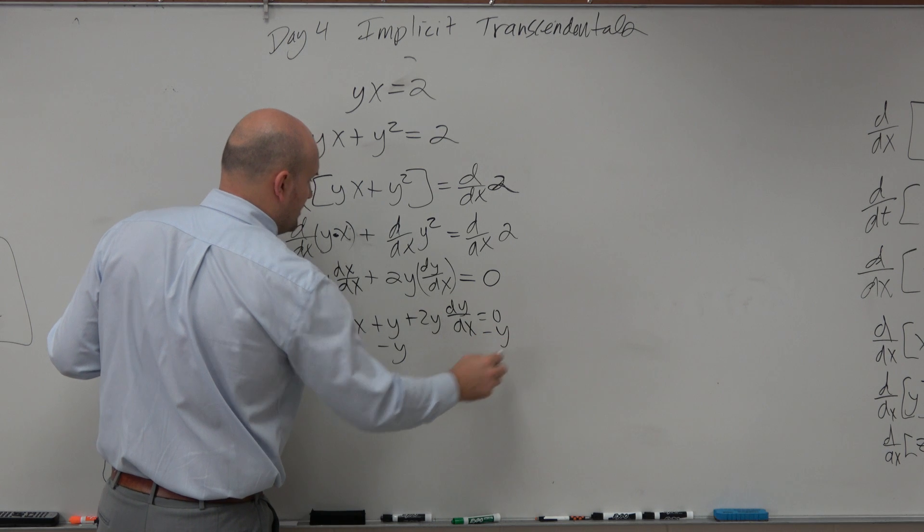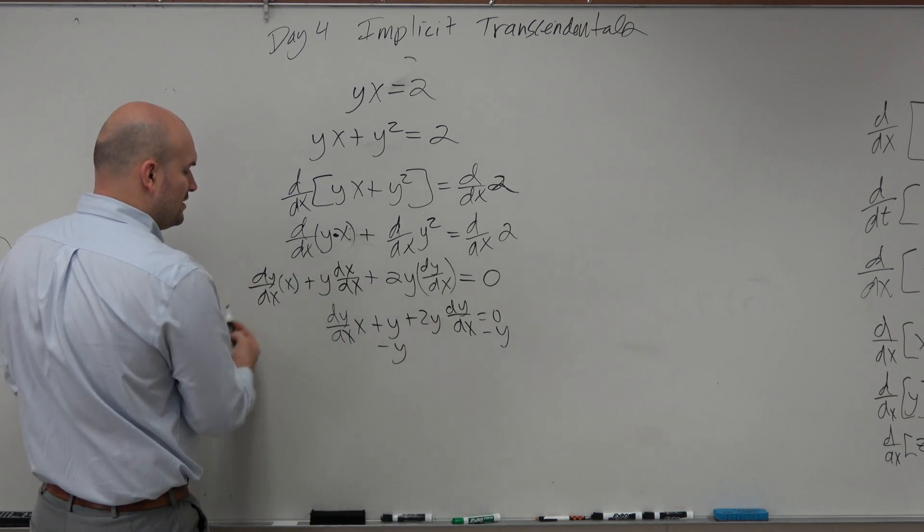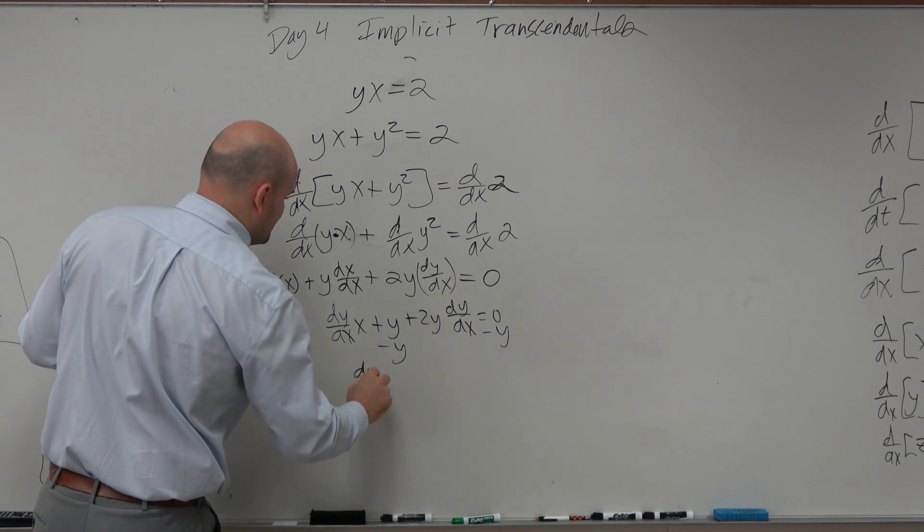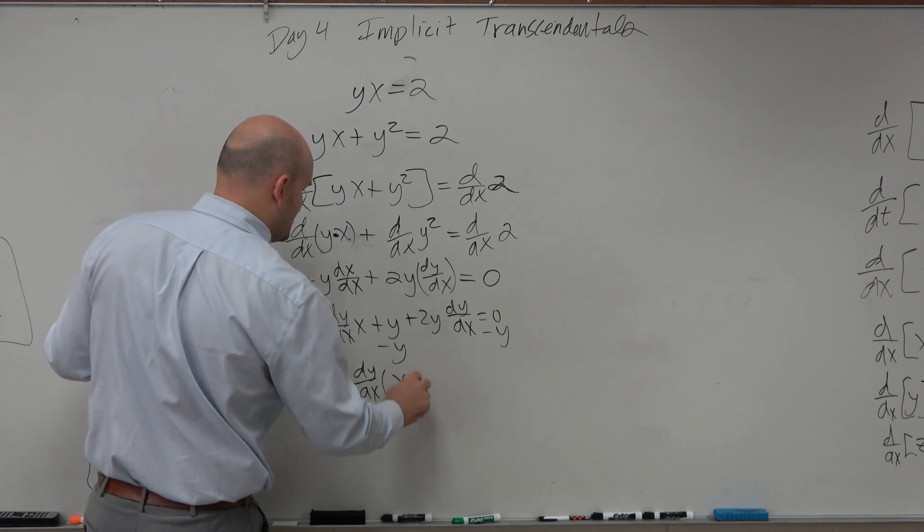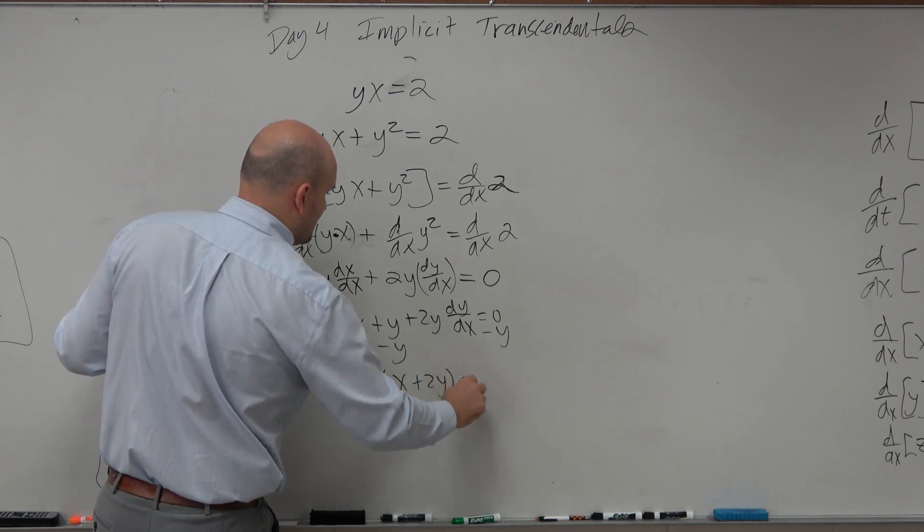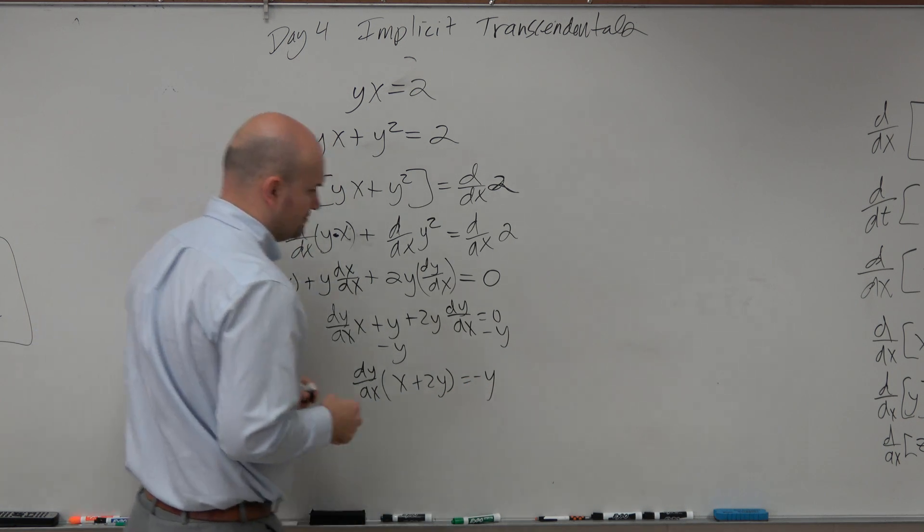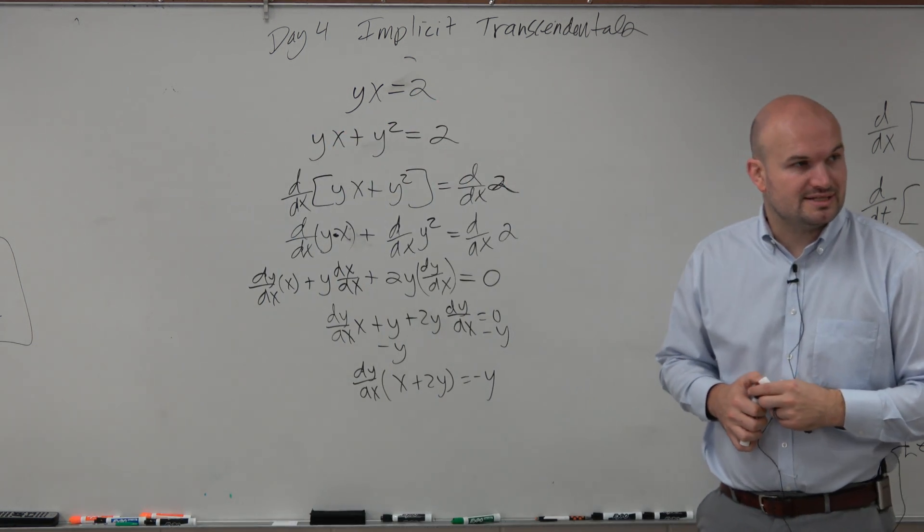Let's subtract the y on both sides, and let's factor out a dy/dx. When I factor out a dy/dx, I'm left with x plus 2y equals a negative y. Does everybody see what I did there?